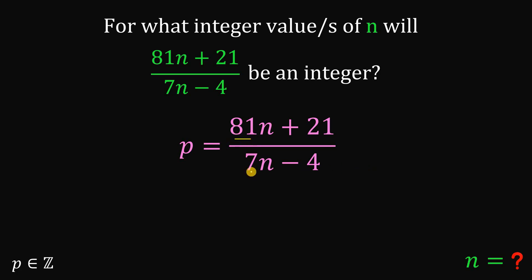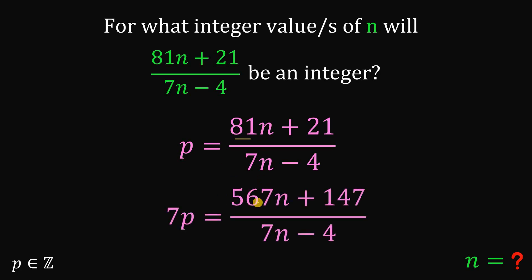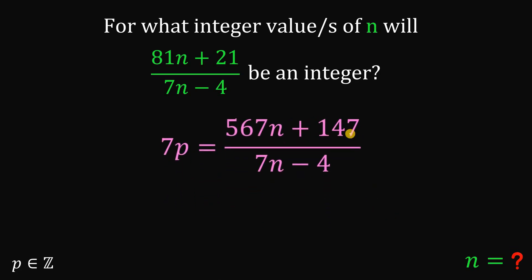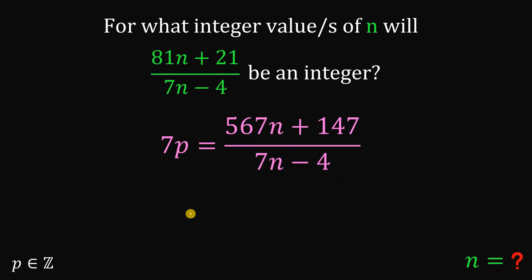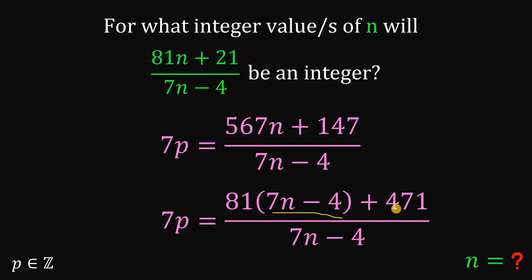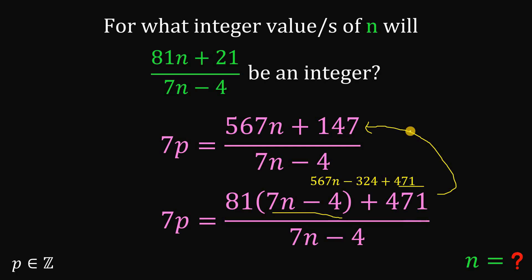Notice 81 is not divisible by 7, so the technique here is to multiply both sides by 7. We get 7p equals 567n + 147. Now let's focus on the numerator of this fraction — we can rewrite it as 81(7n - 4) + 471, because 81 times (7n - 4) is 567n - 324, and adding 471 gives us back 567n + 147.